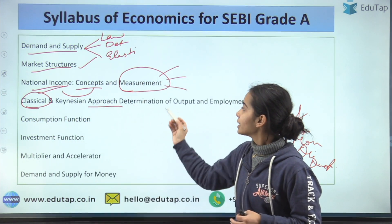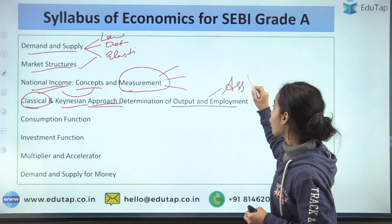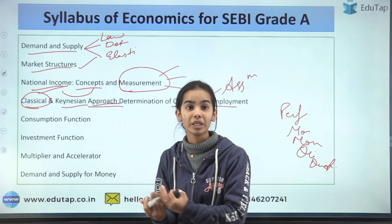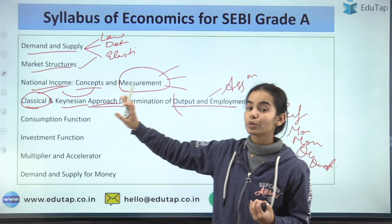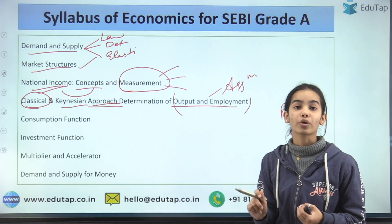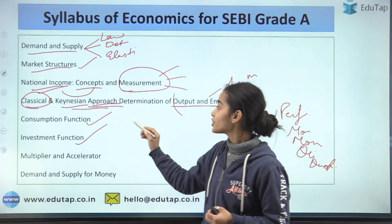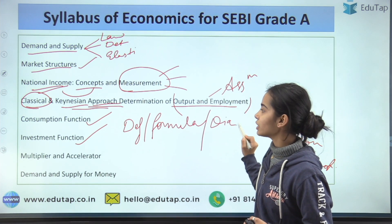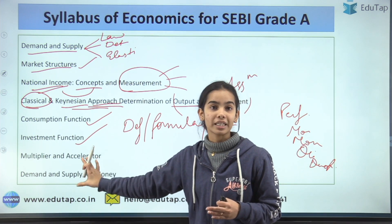Then understand the classical approach and the Keynesian approach for output and employment. You need to understand the assumptions of both: the classical assumes a supply-side economy, while the Keynesians focused on the demand-side economy. In the Keynesian model, the Keynesian cross is most important. If you understand the Keynesian approach, the consumption function and investment function will be easy — just understand the definition, formula, and diagram.